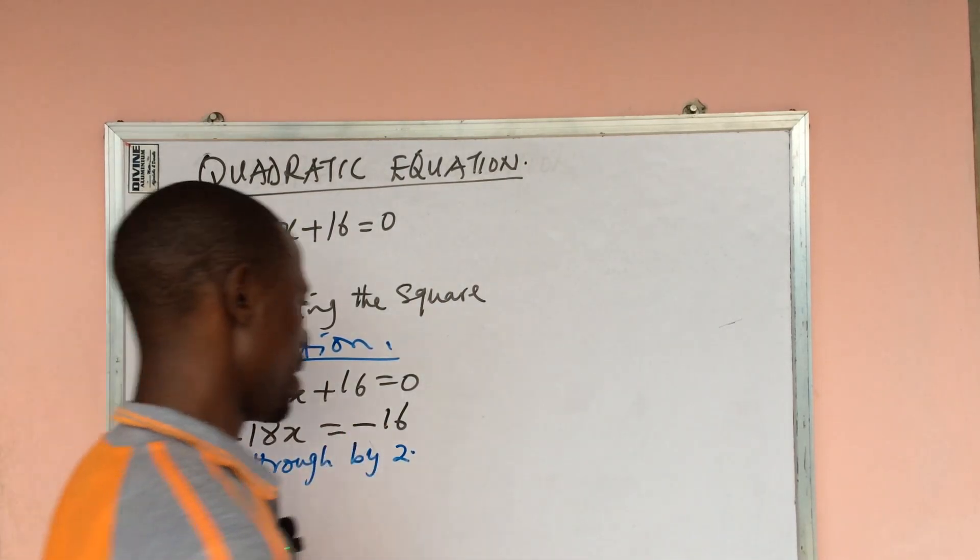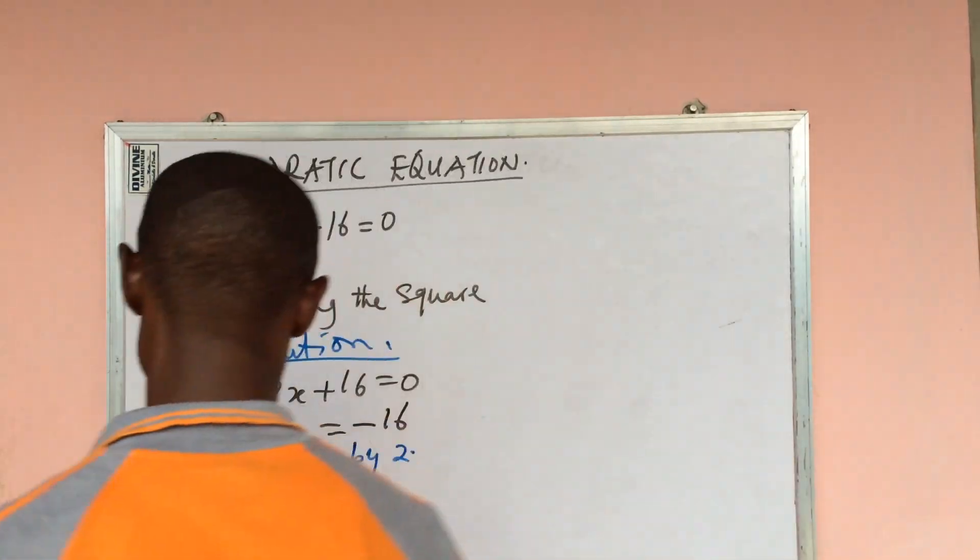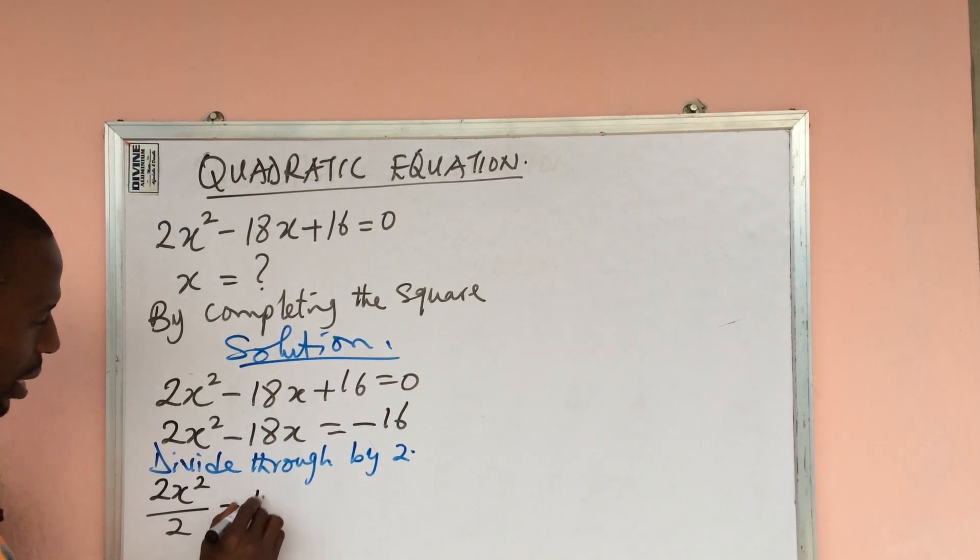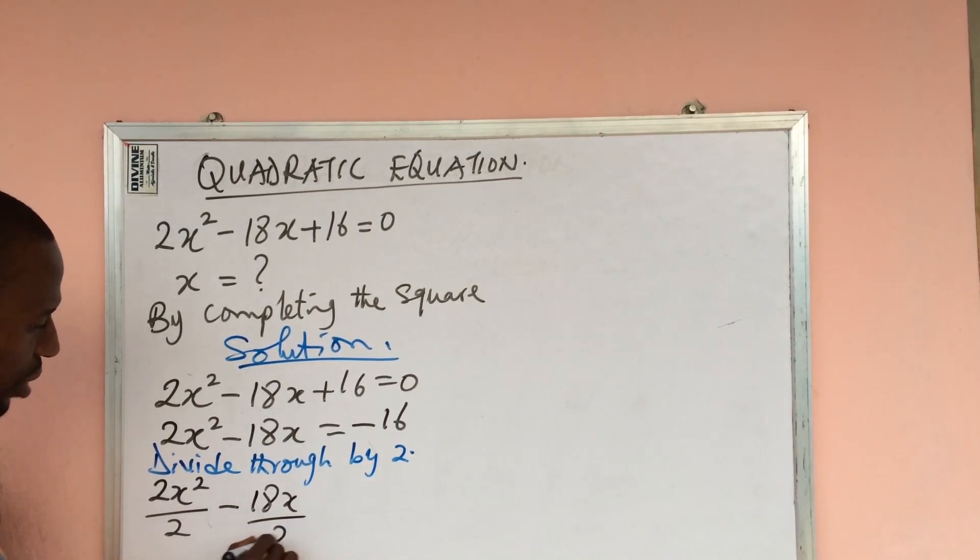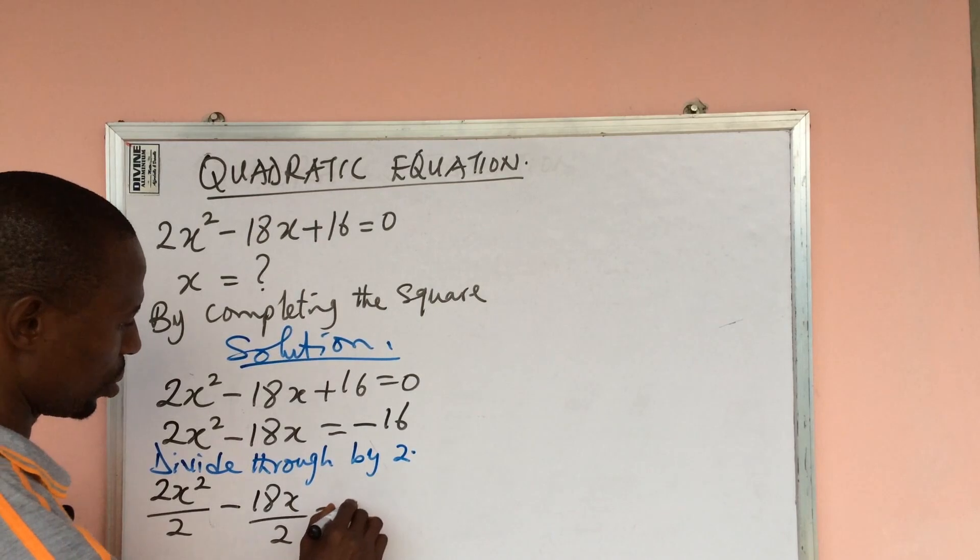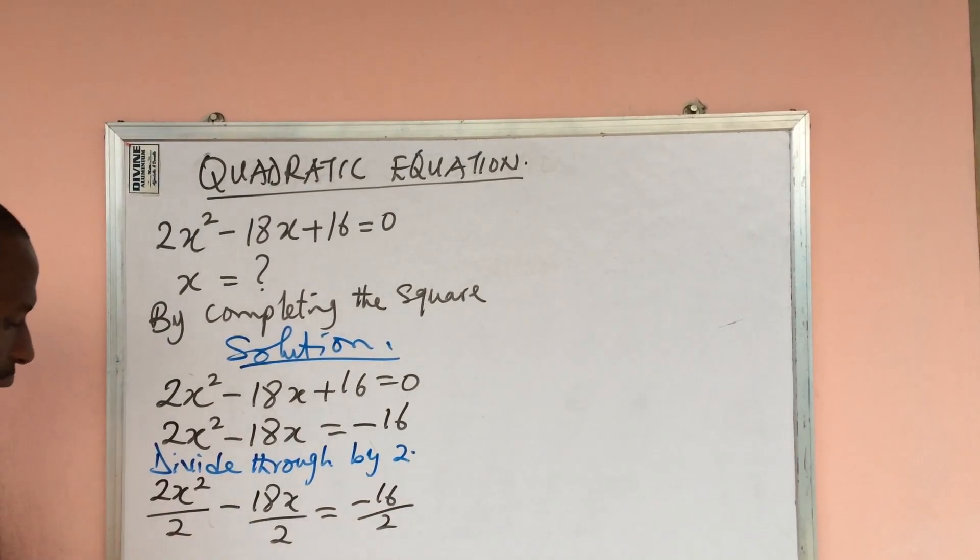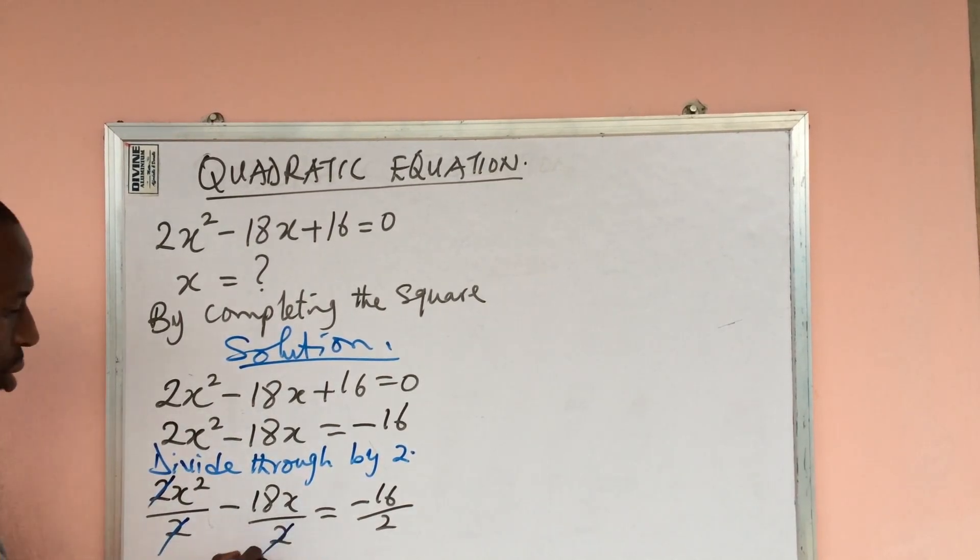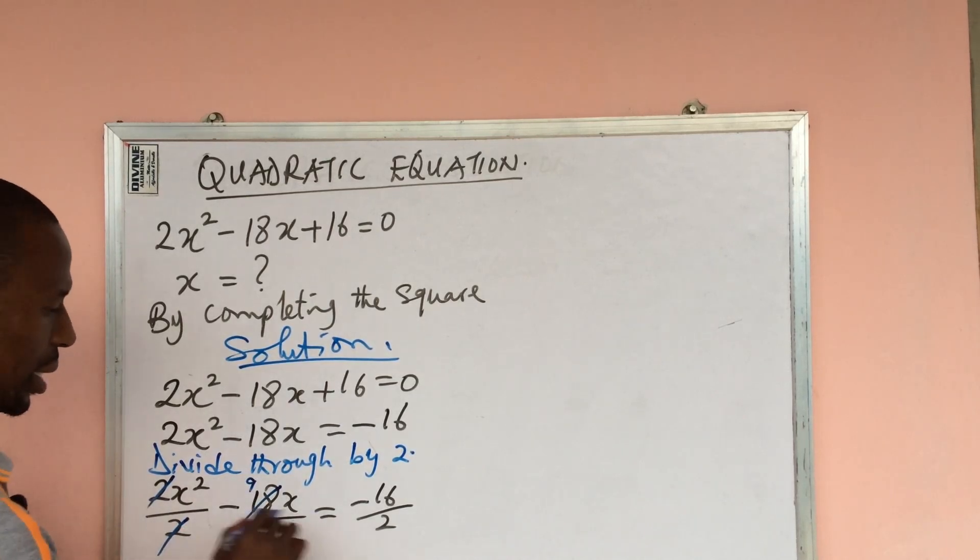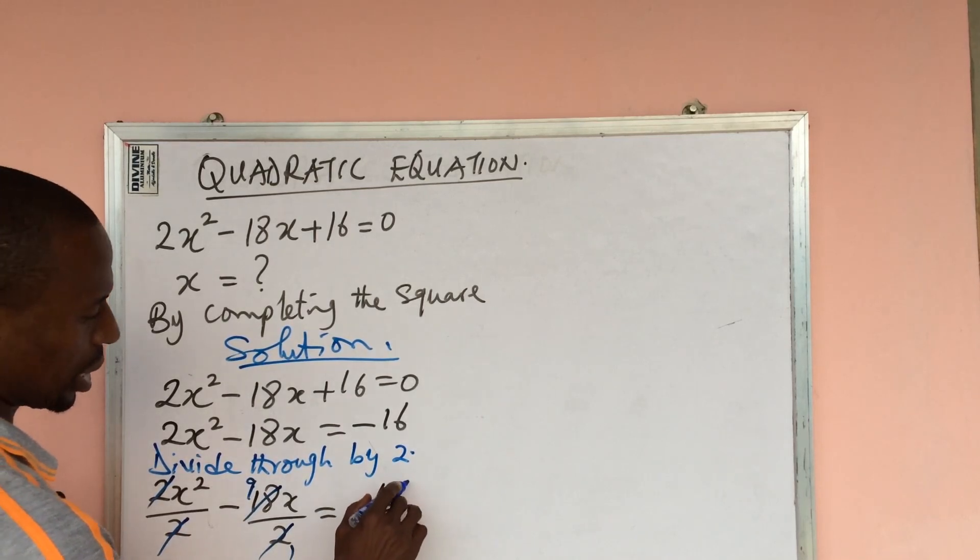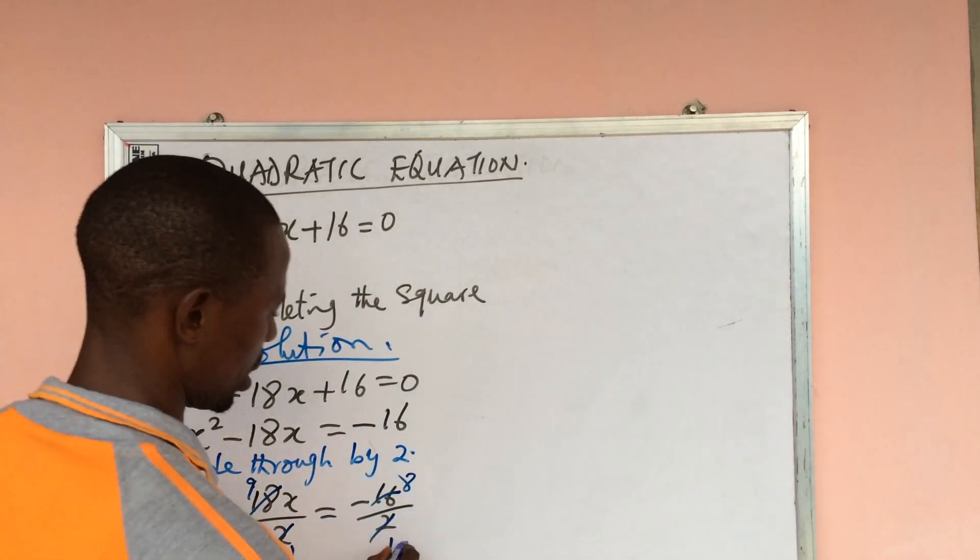So what we do here is divide through by two. We are going to divide everything by two. So if we do that, this will give us 2x²/2 - 18x/2 = -16/2. So from here, 18 divided by 2 gives us 9, and 16 divided by 2 gives us 8.